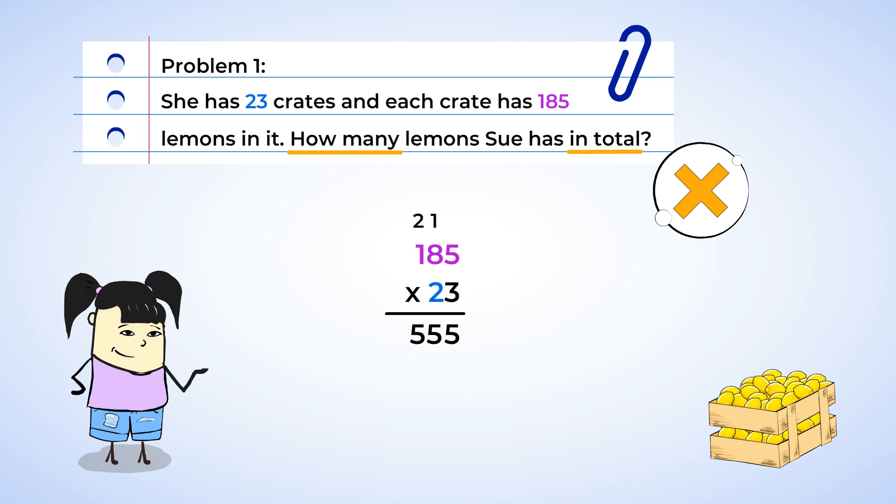Before we start multiplying everything by the 2, we need to place a 0 in the ones place. When we multiply it by 2, we're really multiplying by 20. So 2 times 5 is 10, and the 0 stays in the tens place, and the 1 is carried over. 2 times 8 is 16. Add the 1 to get 17. The 7 stays, and the 1 is carried over. And now 2 times 1 is 2, plus 1 is 3.